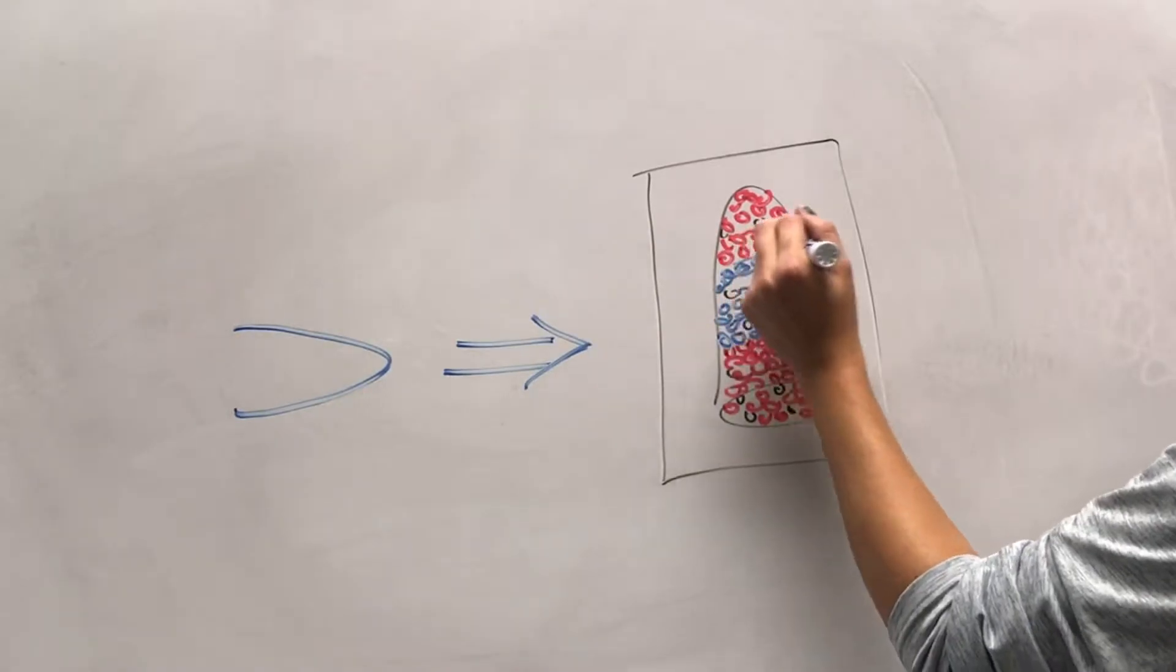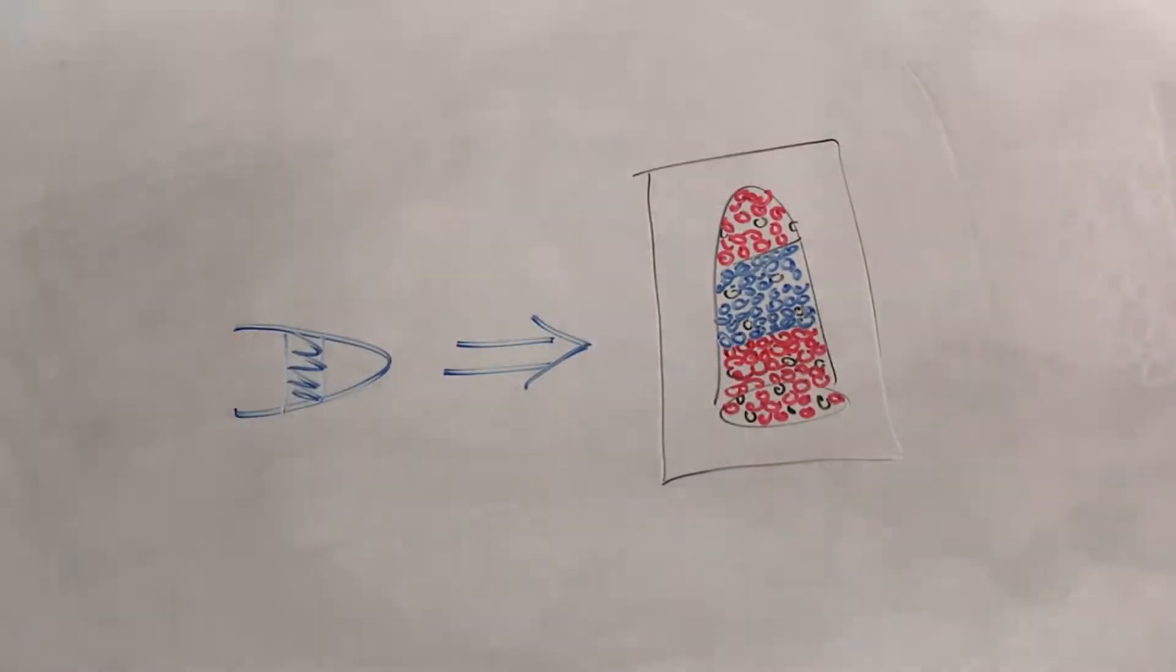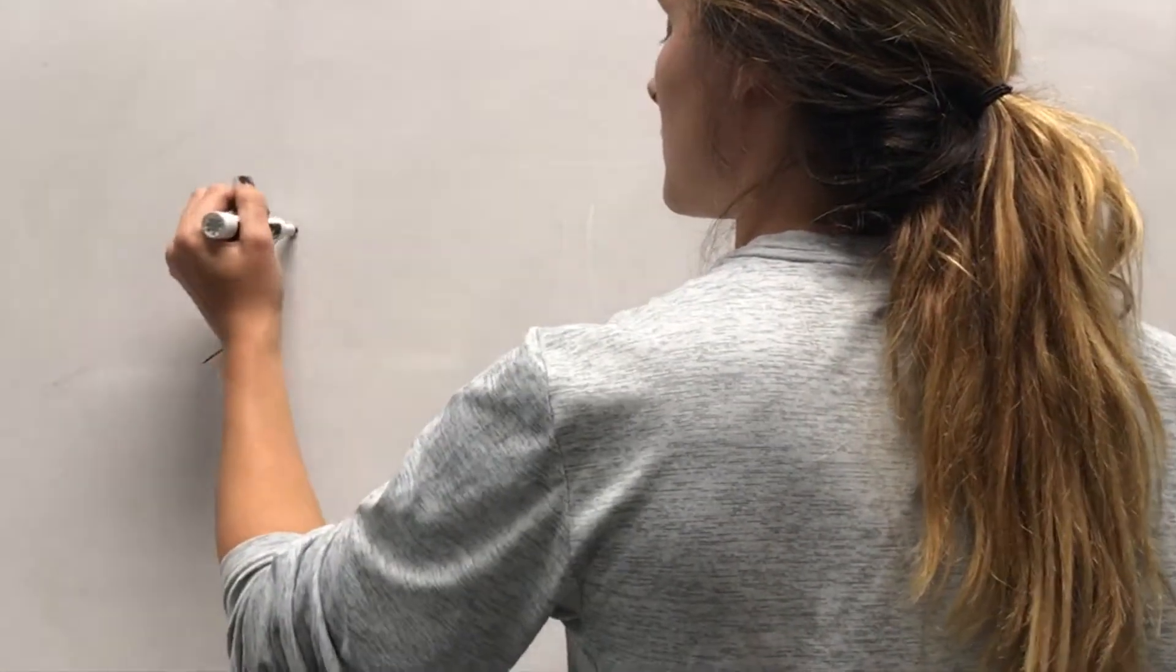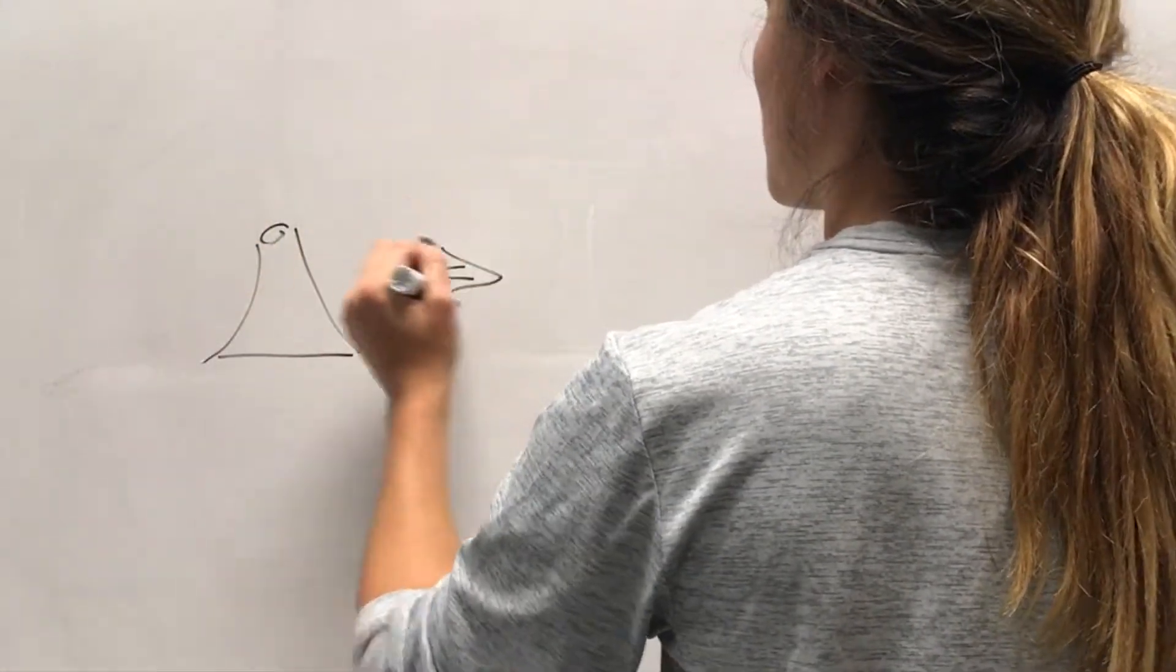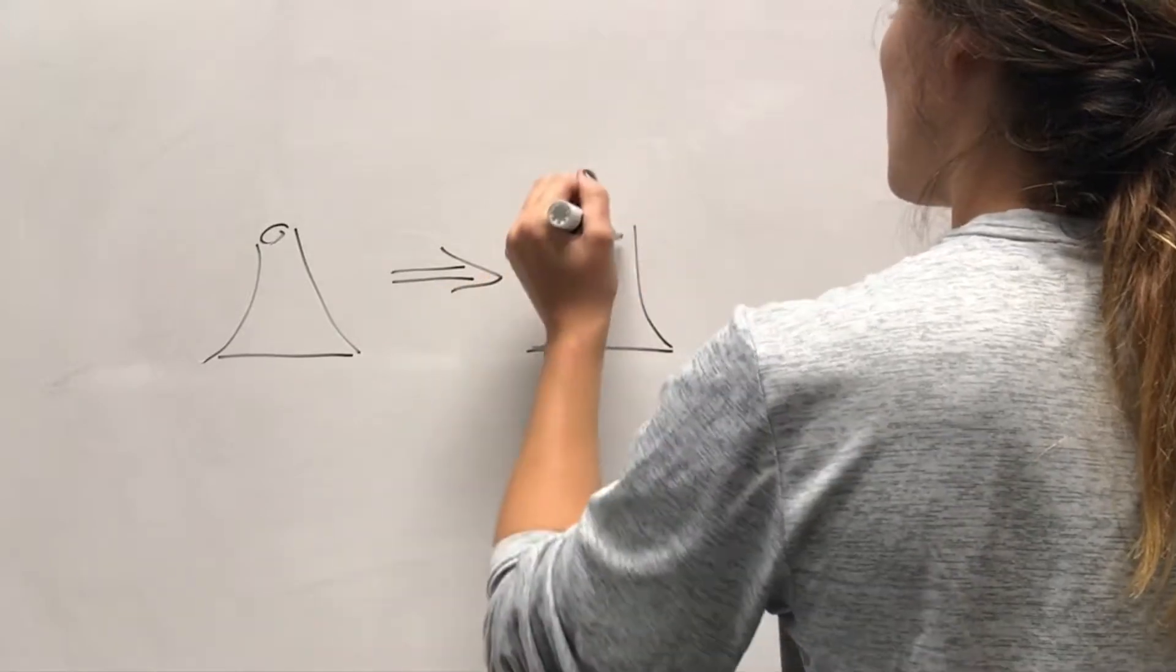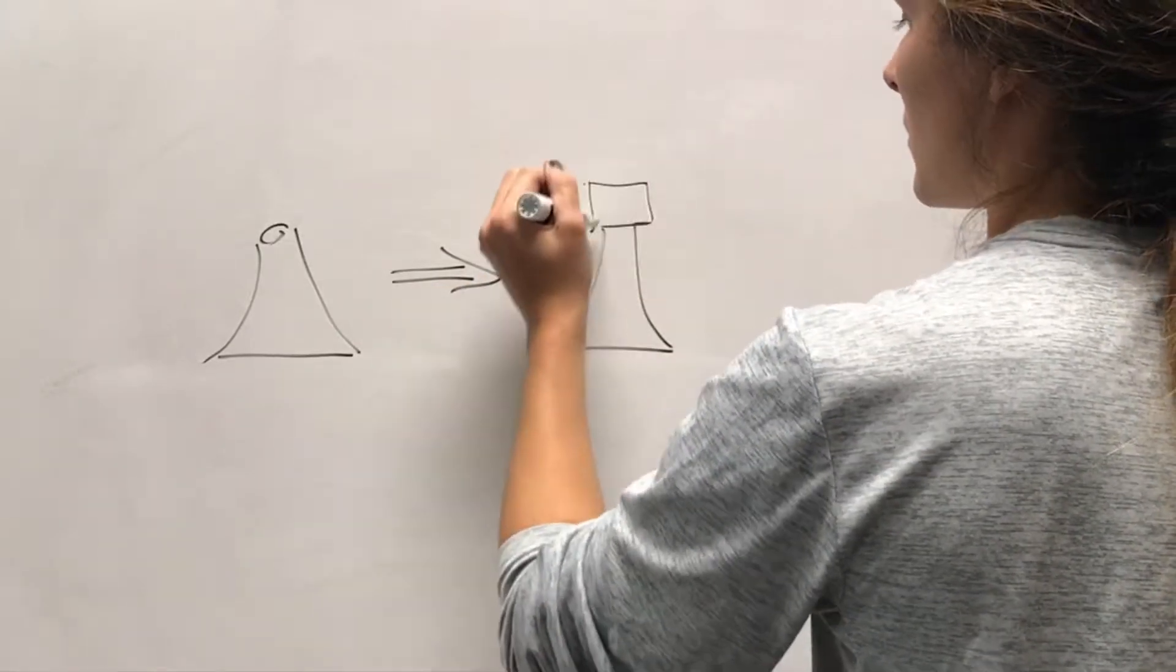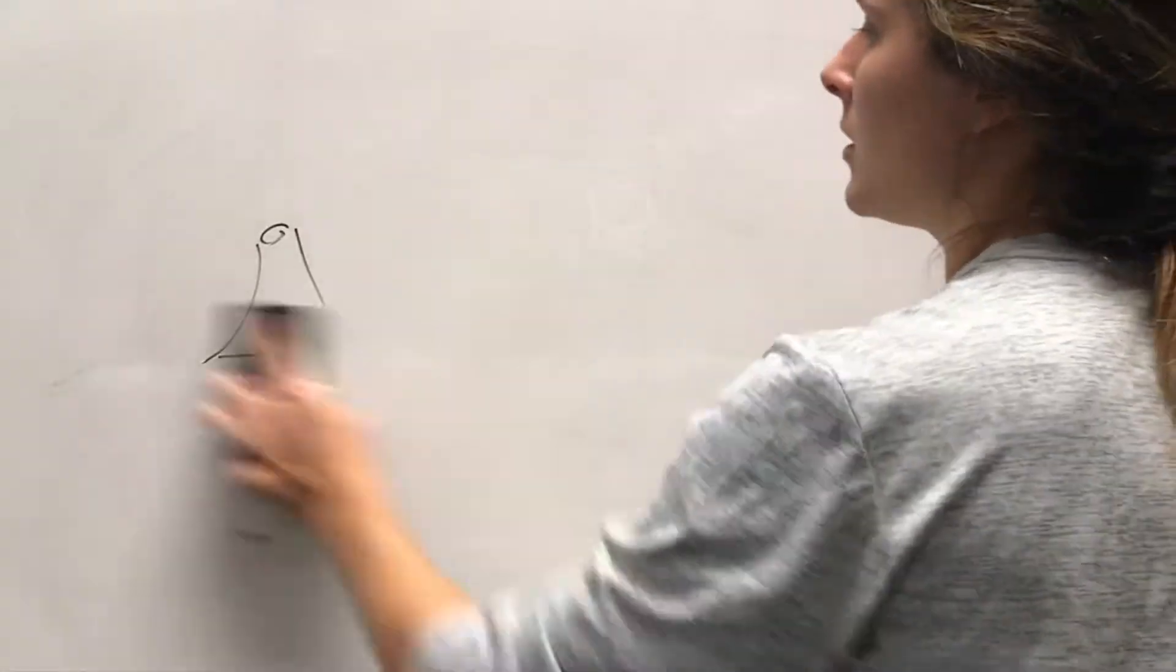The atom probe will create a 3D image of the sample providing spatial coordinates of the atoms and atom type. Sample preparation varies depending on the thickness of the specimen being examined. Materials must be within a specific range of sizes in order to have appropriate atom analysis. If the sample is too large, the probe will not be able to accurately analyze and identify the sample.